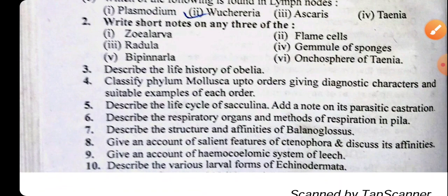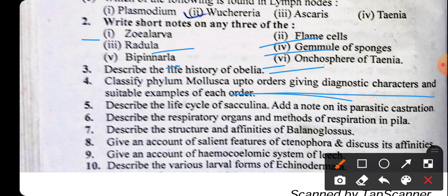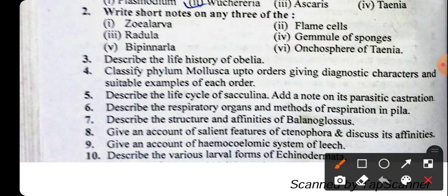The short answer questions include: the first step of Jolly — Jolly larva, flame cells, redula, camel of sponges, planaria, oncosphere of Taenia, and describe the life history of Obelia. Classify phylum Mollusca up to order giving diagnostic characteristics and suitable examples. Describe the life cycle of Sacculina. Describe the respiratory organs and method of respiration in Pila. Describe the structure and affinities of Balanoglossus. Give an account of salient features of Ctenophora and discuss affinities, haemal system of leech, and various larval forms of Echinodermata.